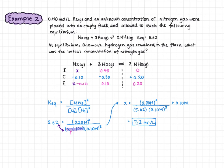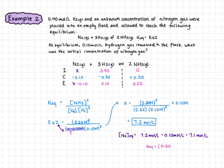To check our work, we solve for the equilibrium concentration of nitrogen: 7.2 minus 0.10 gives an equilibrium concentration of 7.1 moles per liter. Substituting into the Keq expression: 0.20 squared divided by 7.1 times 0.10 cubed gives 5.63. With some rounding, that's essentially 5.62, verifying that we've done our calculation correctly.